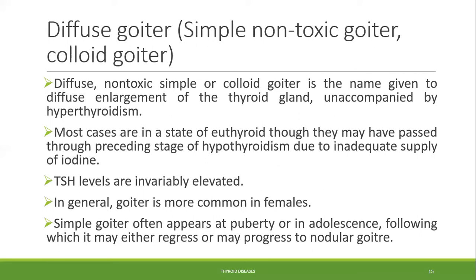Diffuse non-toxic simple or colloid goiter refers to diffuse enlargement of the thyroid gland unaccompanied by hyperthyroidism. Most cases are in a euthyroid state, though they may have passed through preceding stages of hypothyroidism due to inadequate iodine supply. There is no hyperthyroidism; there can be hypothyroidism followed by euthyroidism, but no hyperthyroidism is present. TSH levels are invariably elevated.